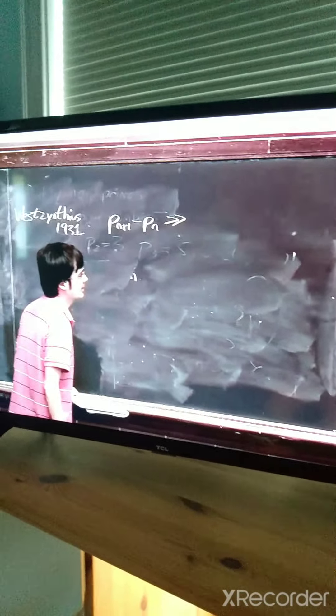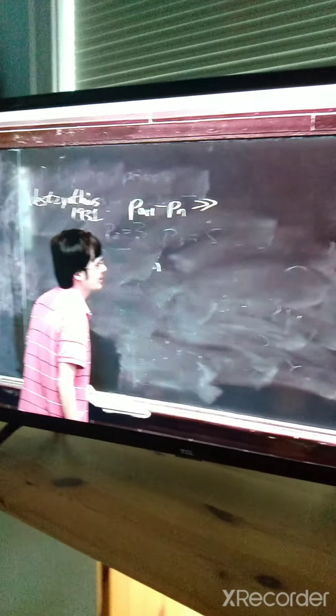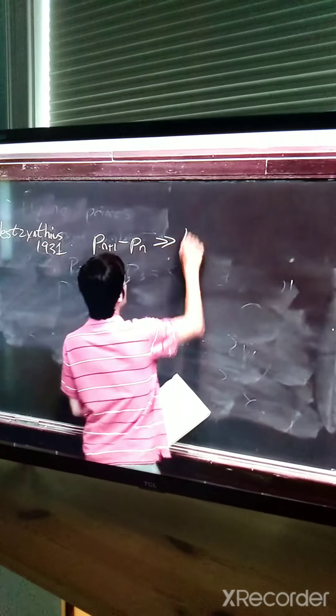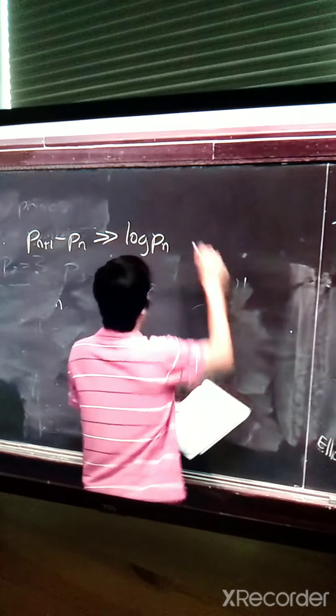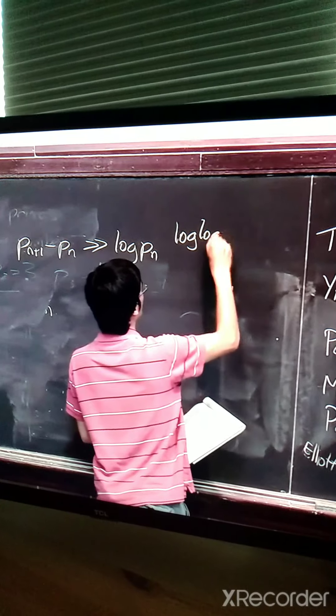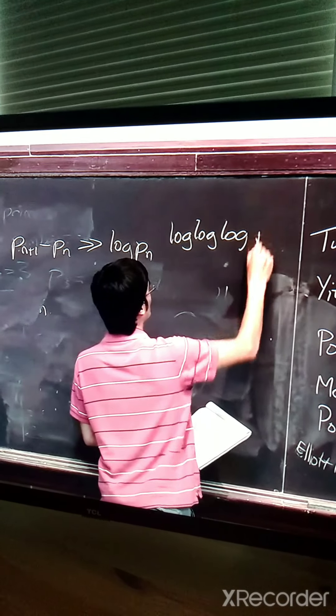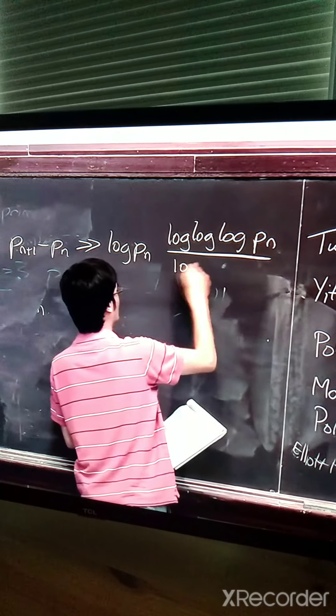So let's see how many logs Terence Tau writes on this blackboard. The correction term turned out to be... except we couldn't quite get that, so we had to divide it by log log log log Pn.